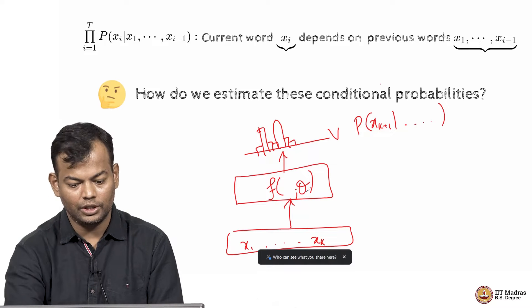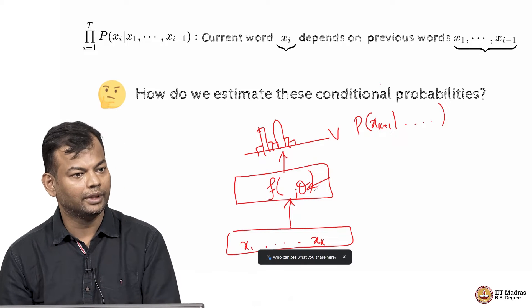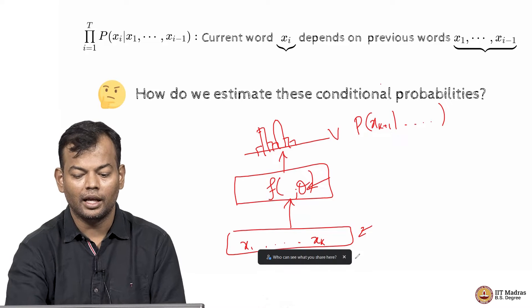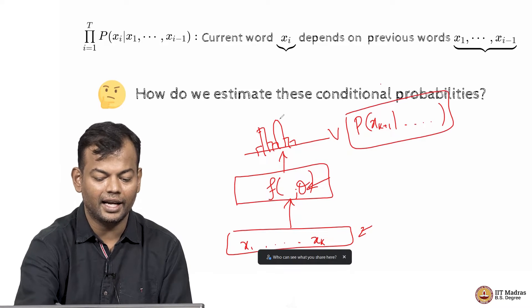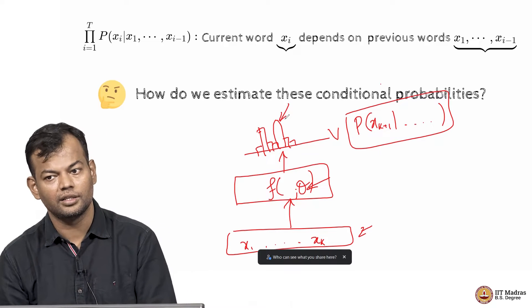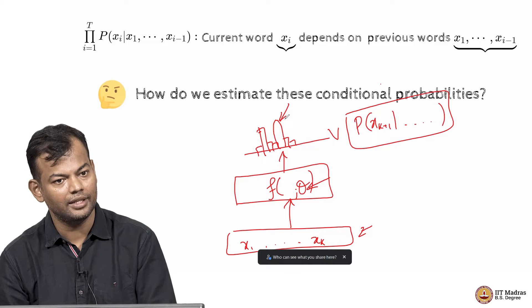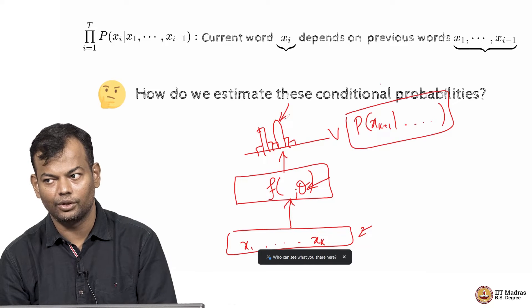And then our job is to learn these parameters theta in a way that for a given sequence, my probabilities are such that the most likely word has the highest probability. Does that make sense? That is what the learning problem boils down to. Everyone gets this.